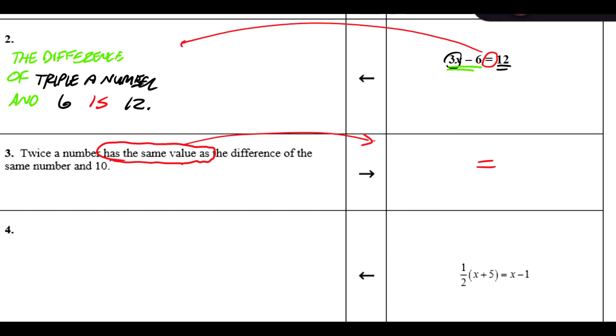It doesn't matter which side we want to translate first. Let's do the left side. The left side is twice a number. Well, we know when we translate that, that's the same as 2 times x.